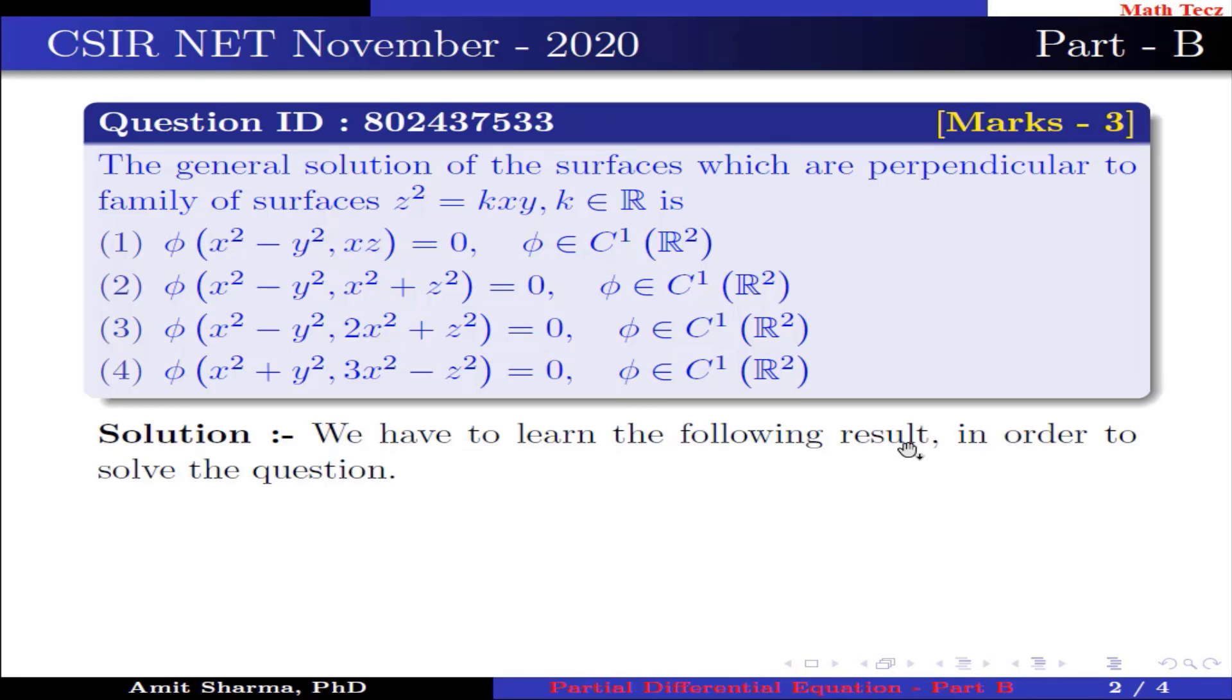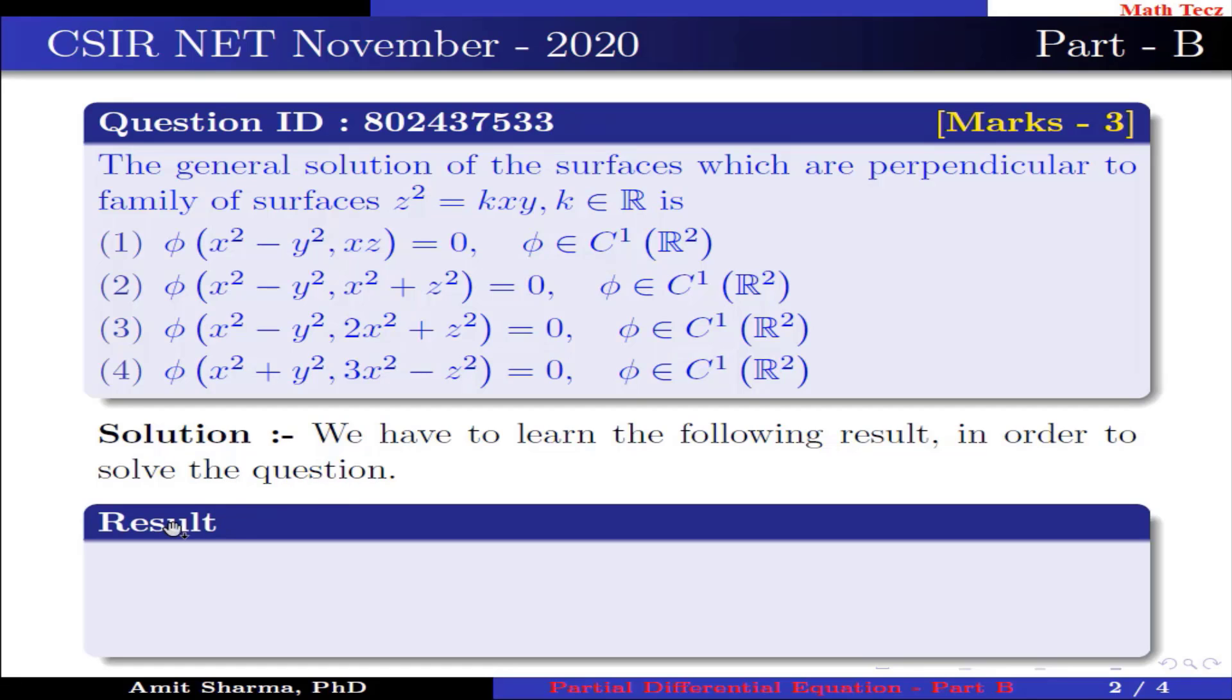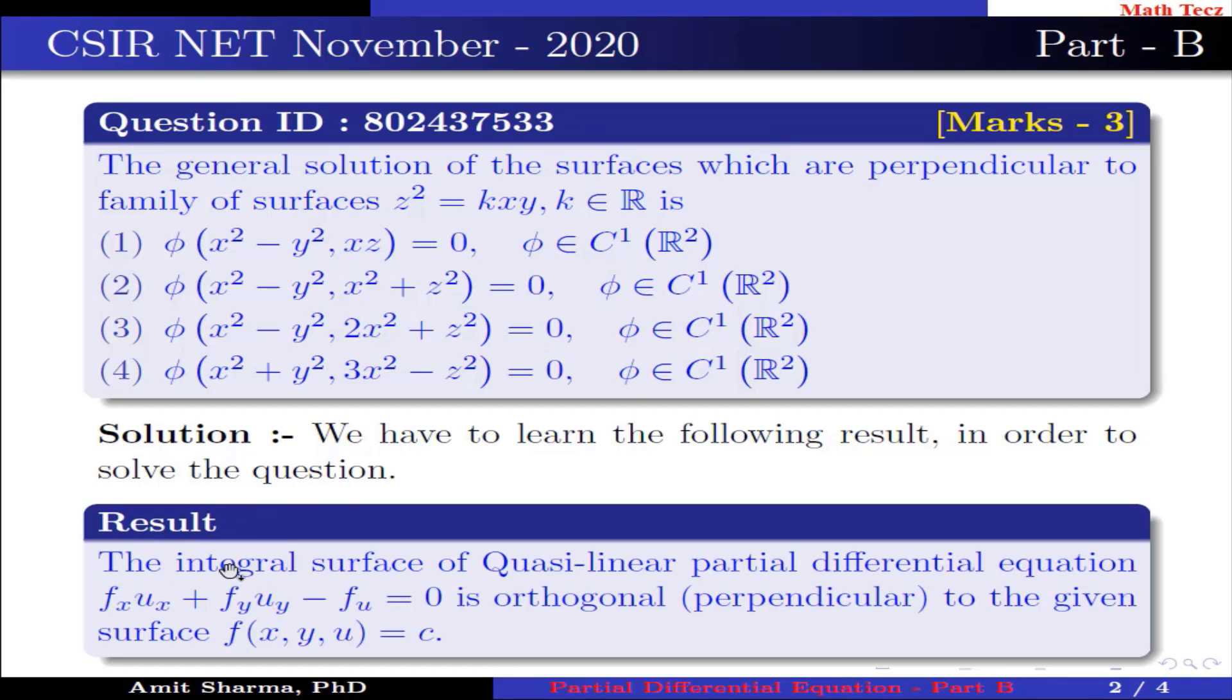We have to learn the following result in order to solve the equation. Result: the integral surface of quasi-linear partial differential equation fx·ux + fy·uy - fu = 0 is orthogonal or perpendicular to given surface f(x, y, u) = C.